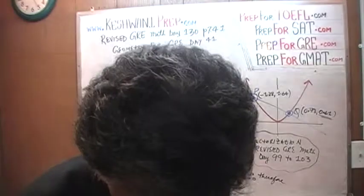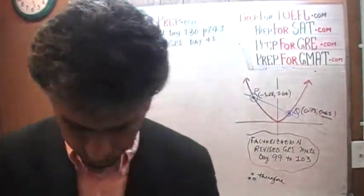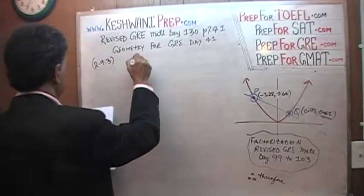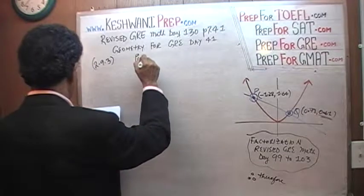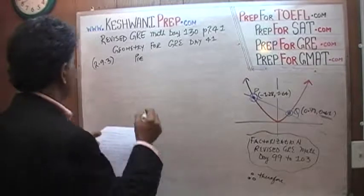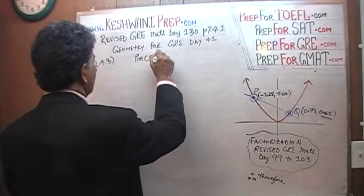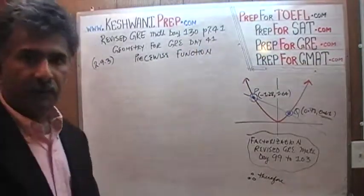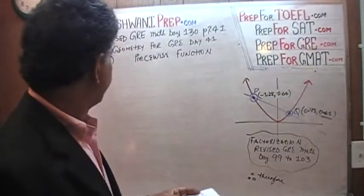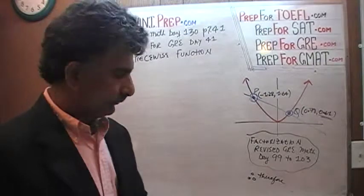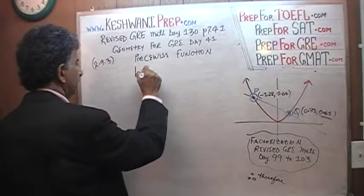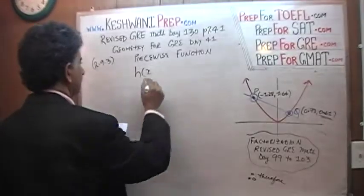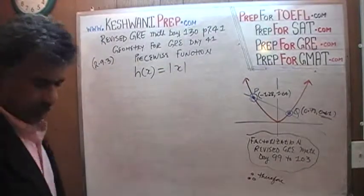The problem that we are about to solve is the one you will find on page number 241, problem 2.9.3. Turn to page 241, 2.9.3. It is what is known as — when the thing is written right in front of me I still have trouble spelling it — a piecewise function. We are going to learn what is known as the piecewise function. Let's see what this means.